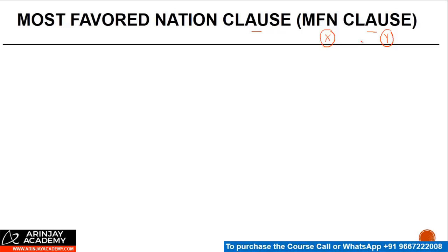Most favored nation clause — the purpose of this clause is that when India is entering into a treaty with some other country, if they have good relationships, then India can agree that if today I enter into a treaty with you which contains some clauses, but tomorrow I enter into another treaty where I give some benefits to someone else, I am going to extend those benefits to you effective from the date when I give those benefits to someone else. And for that, I don't need to come back and renegotiate or re-sign the treaty with you. Those will be automatically applicable in your case.